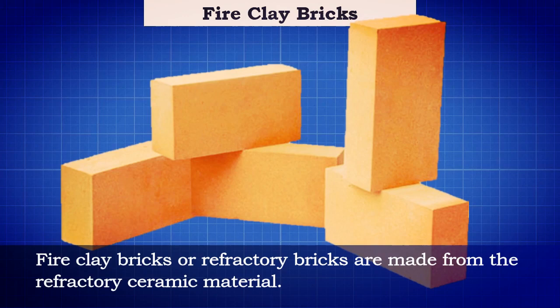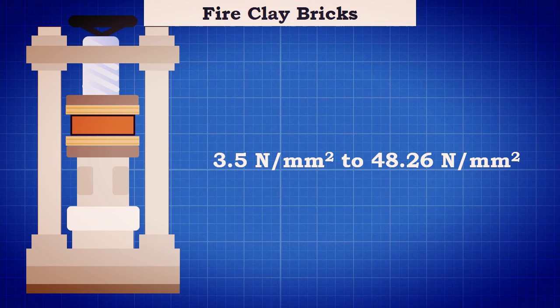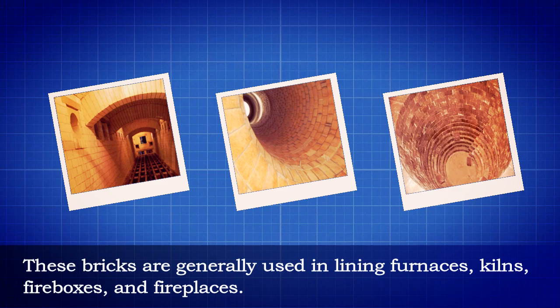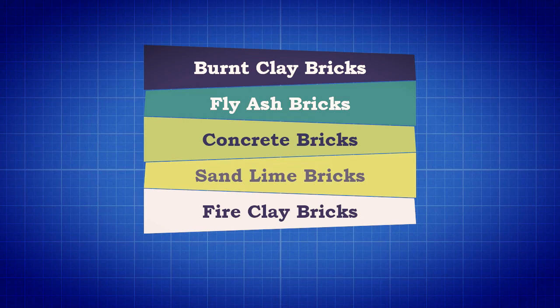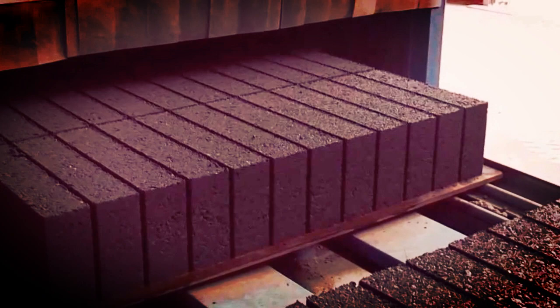Fire clay bricks, or refractory bricks, are made from refractory ceramic material. Fire bricks contain a high amount of aluminium oxide — as high as 50 to 80 percent — with correspondingly less silica. The compressive strength varies between 3.5 and 48.26 Newton per millimeter square. These bricks are generally used in lining furnaces, kilns, fireboxes, and fireplaces, and are among the most commonly used bricks based on materials used in construction.